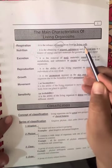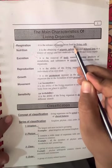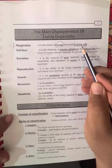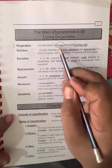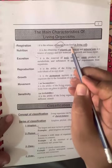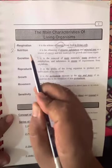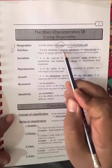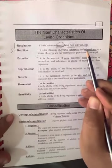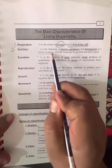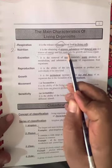So the living cell releases energy which is stored inside the food. Number two: nutrition. It's the obtaining of organic substances and mineral ions as a source of energy and raw material for building, growth, and tissue repair.